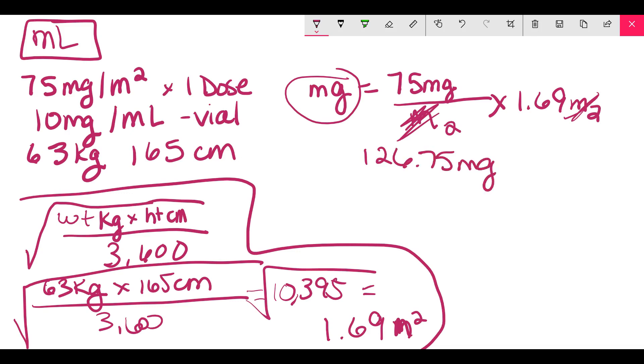So many of you stopped at that point, but we need to go further because we have the vial. We have 10 milligrams per 1 mL. So now we need to set up that formula. So this is step 1, step 2, and then let's go to the step 3.